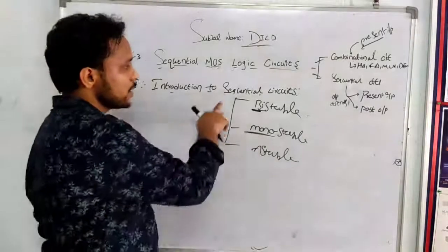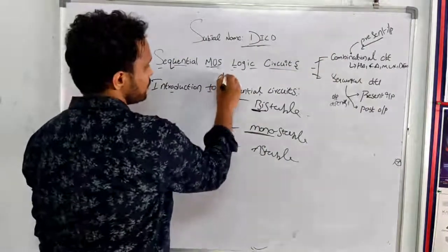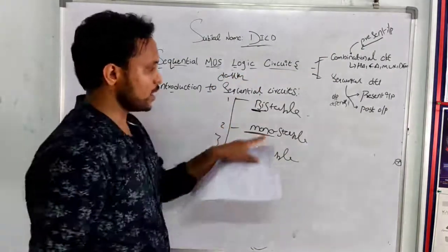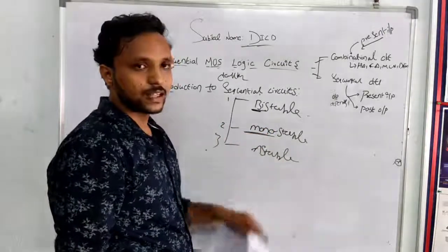Okay, let us continue our topic. Sequence of circuits can be classified into three types: one is bi-stable, another one is monostable, third one is unstable.